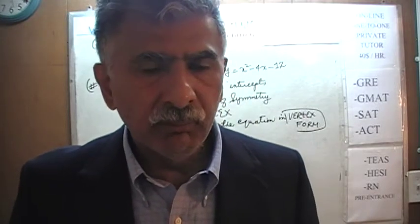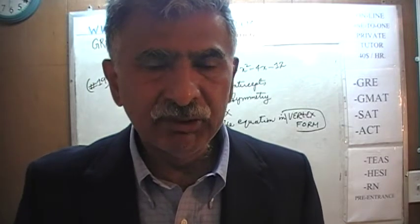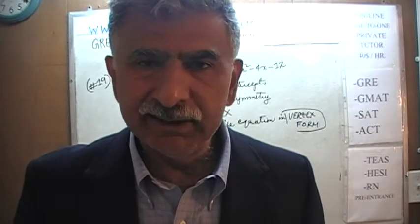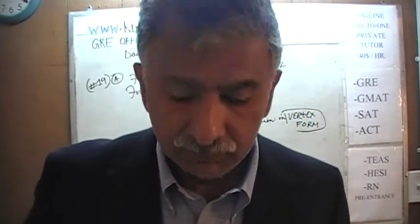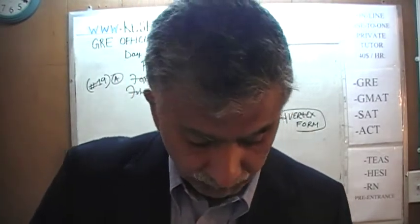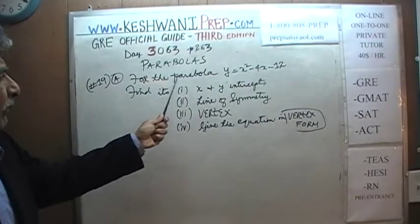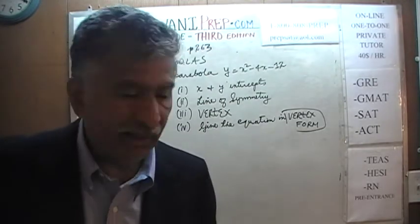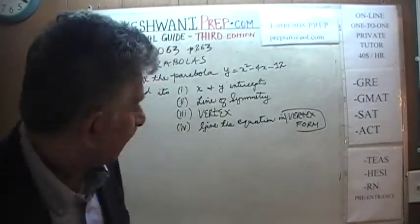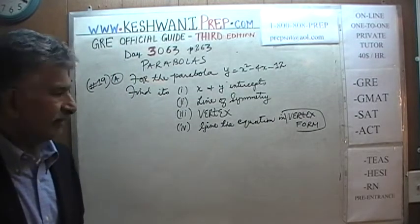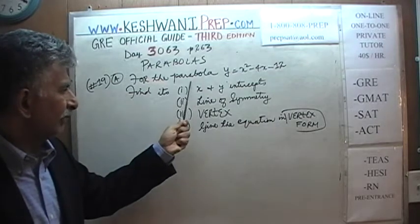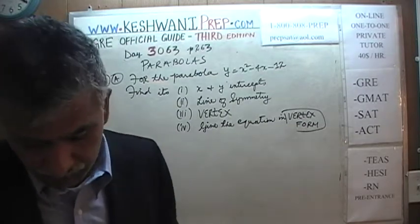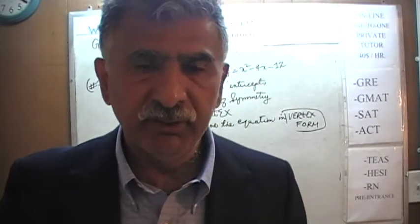After we finish today's problem, we are going to do three more videos — the next three days — where we will deal with three more parabolas not in the book, labelled 19B, 19C, and 19D. The problem today is on the blackboard: for the given parabola y = x² - 4x - 12, find its x and y intercepts, find the coordinates of its vertex, find the equation of the line of symmetry, and give the equation in vertex form.